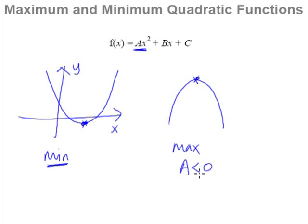Conversely, if your a happens to be greater than zero, then you will have a smiley face, a minimum curve that's in the shape of a u.